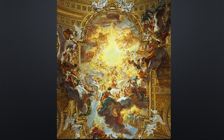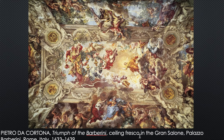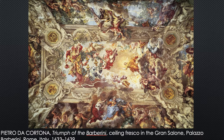Here's another one, painted for a secular setting — this was the home of the Pope's family, the Barberini family — the Triumph of the Barberini. The whole subject here is to show how God is blessing the Barberini family, giving them special honor. In it you can see the three bees from their coat of arms, the Barberini coat of arms. The papal tiara is somewhere here.